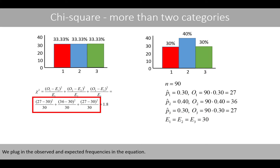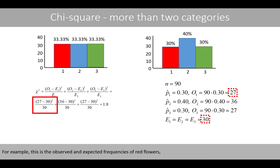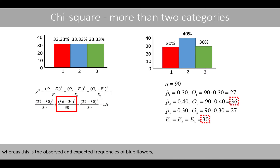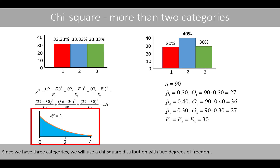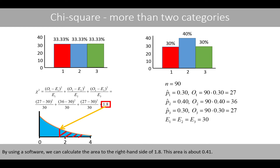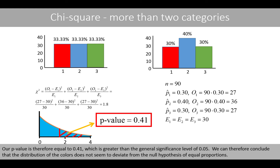We plug in the observed and expected frequencies in the equation. For example, this is the observed and expected frequencies of red flowers, whereas this is the observed and expected frequencies of blue flowers, and these are the corresponding frequencies of green flowers. The chi-square test statistic is calculated to 1.8. Since we have three categories, we will use a chi-square distribution with two degrees of freedom. By using software, we can calculate the area to the right-hand side of 1.8, which is about 0.41. Our p-value is therefore 0.41, which is greater than the general significance level of 0.05. We can therefore conclude that the distribution of the colors does not seem to deviate from the null hypothesis of equal proportions.